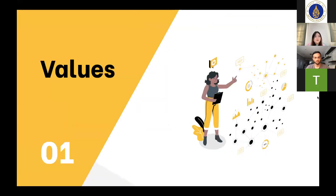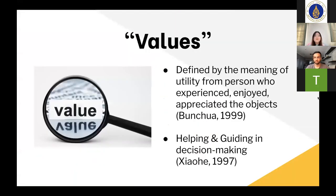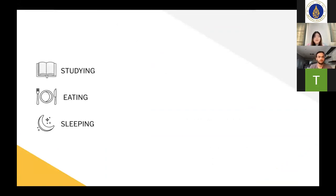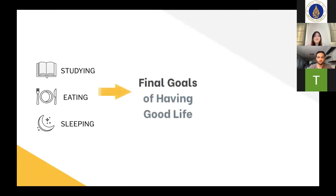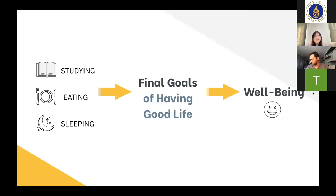Now let's get to know what values mean. Values are divided by the meanings derived from the person who experienced, enjoyed, and appreciated the object. Values also help guide individuals in their decision-making to act in their best way. In our daily life, activities such as studying, eating, and sleeping lead us to the final goals of having a good life, which further leads us to happiness, so-called well-being. These final goals can be divided into two values: intrinsic value and instrumental values.